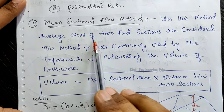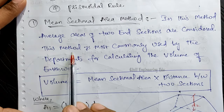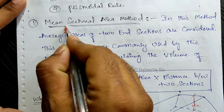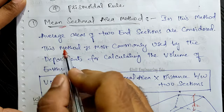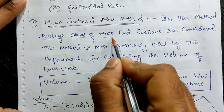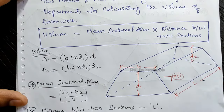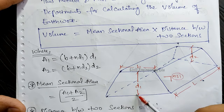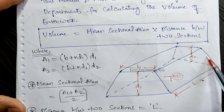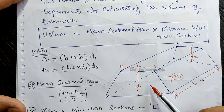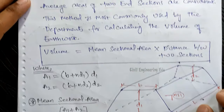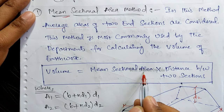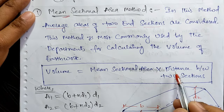In the mean sectional area method, the average areas of two end sections are considered. This method is most commonly used by departments for calculating the volume of earthwork. Mean means taking the average — we take the average of the two end sections. So if you see the figure, this is a trapezoidal-shaped earthwork with one section at depth D1 and another end section at depth D2. The average of these two sections is the mean sectional area. Volume is equal to mean sectional area multiplied by the distance between two sections.